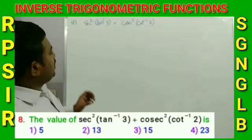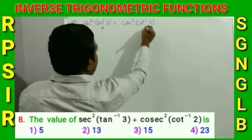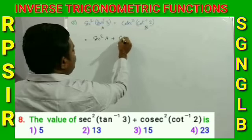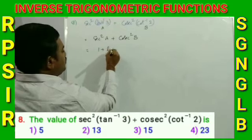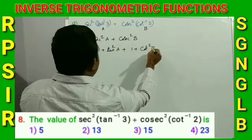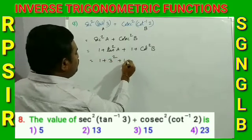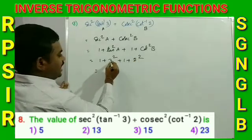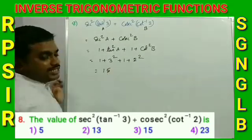Question number 8: Find the value of sec²(tan⁻¹ 3) + cosec²(cot⁻¹ 2). Let tan⁻¹(3) = a and cot⁻¹(2) = b. Then sec²(a) = 1 + tan²(a) = 1 + 9 = 10, and cosec²(b) = 1 + cot²(b) = 1 + 4 = 5. Total = 10 + 5 = 15. Option 3 is the correct answer.